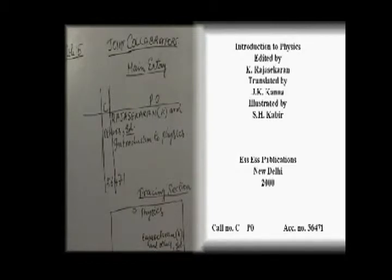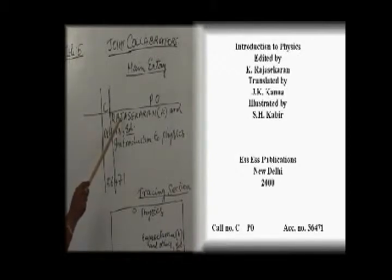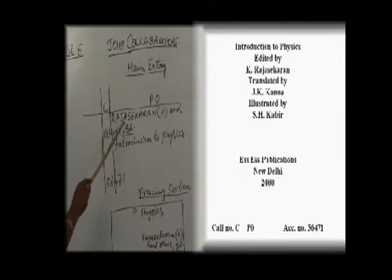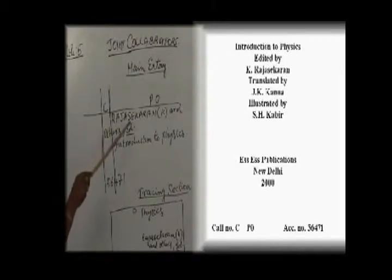Now the example for joint collaborators: just like an author, you are allowed to use only up to two collaborators. If there are more than two collaborators, we use the word 'and others' and then go for the descriptive element. In the horizontal line the class number starts from the first vertical, then the book number P0. Below the horizontal line we write the heading section — the collaborator's surname in capital letters, the rest of the names as initials within parenthesis, and the word 'and others' because there are more than two collaborators.